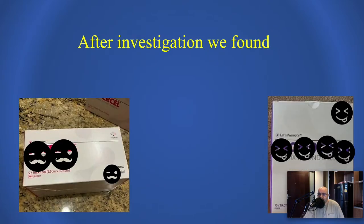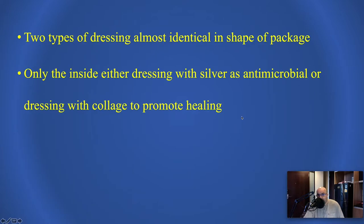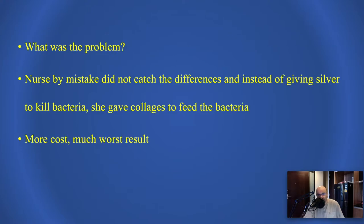After investigation, we discovered that the nurse responsible for applying the dressings got confused between two types. Almost identical in packaging from the company, these wound dressings were identical except by name, yet they work in completely contradicted ways. One contained silver and was used as an antimicrobial intended for treatment, and the second was collagen used to promote wound healing.